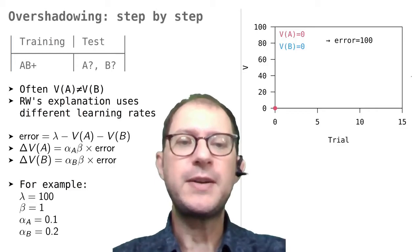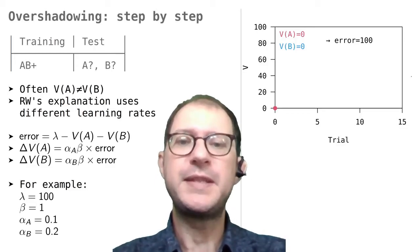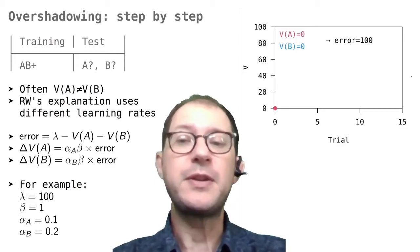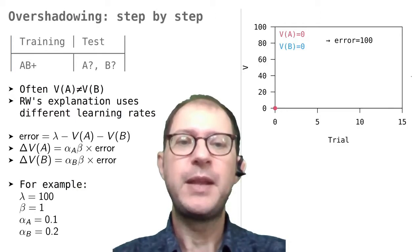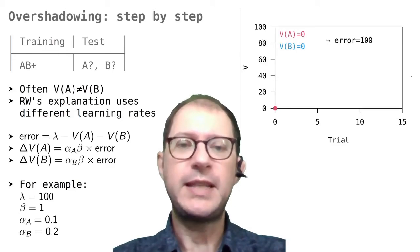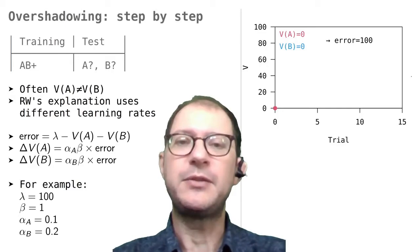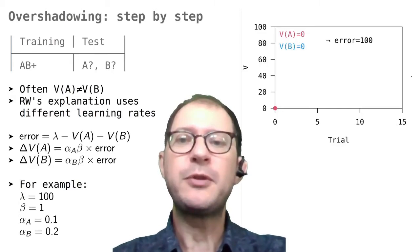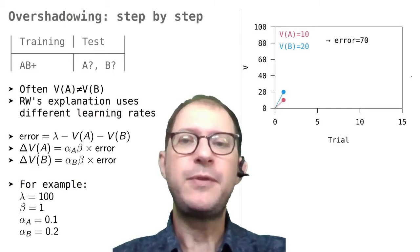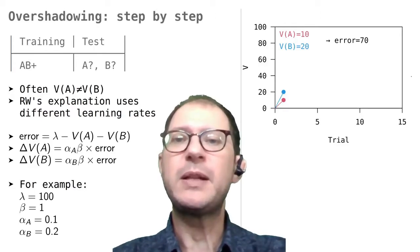When the experiment starts, V(A) and V(B) are both 0, and this means that the error is 100 for both stimuli. So the update to V(A) is 0.1 times 100, which is 10, and the update to V(B) is 0.2 times 100, which is 20. So after the first experience, we have V(A) equals 10 and V(B) equals 20.